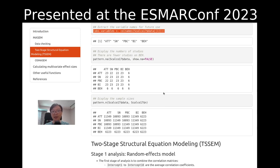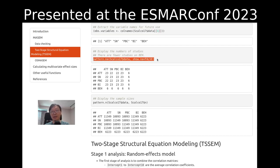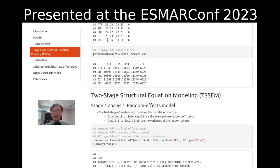The first thing for us is to check the missing pattern. We can use this command. We can see that for some variables there are 23 studies, but for the behavior variable there are only six. We can also check the total sample size on each cell.